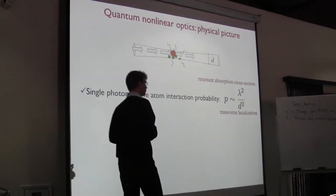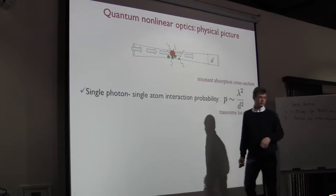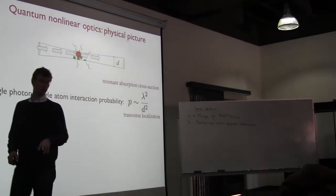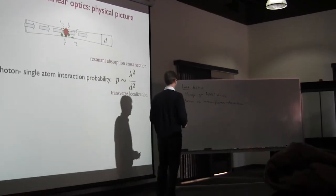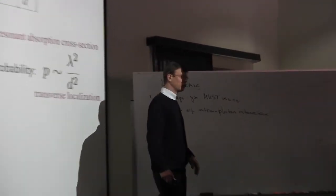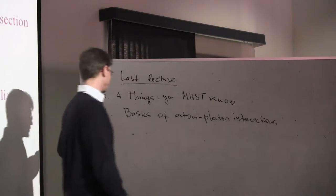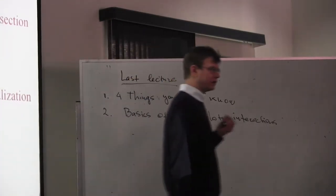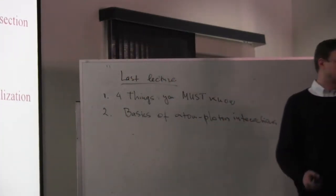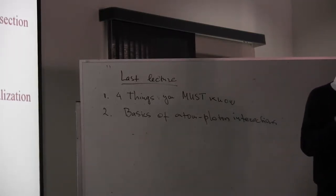I'd like to go on with my lecture, but before I do, I'd like to remind you what we talked about. We covered four out of five things you must know in order to be able to leave biosphere. The second thing we talked about is the basics of atom-photon interaction, and we identified the key parameter which governs the interaction between a single atom and a single photon. What is this key parameter? It's cooperativity.